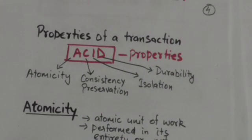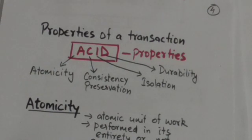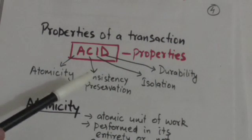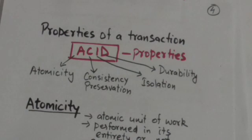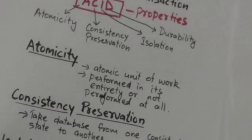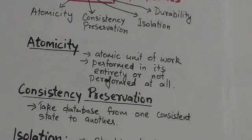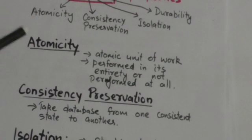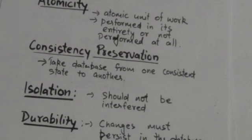A transaction must have certain properties, which are often called ACID properties. These are: Atomicity, Consistency preservation, Isolation, and Durability. Atomicity means a transaction is an atomic unit of processing — it should either be performed in its entirety or not performed at all.